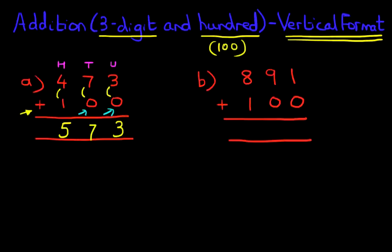Now the same principle applies here. I'm not going to bother labeling it. 1 plus 0 is 1. 9 plus 0 is 9. And now we have 8 plus 1. 8 plus 1 is 9. So 891 plus 100 is 991.